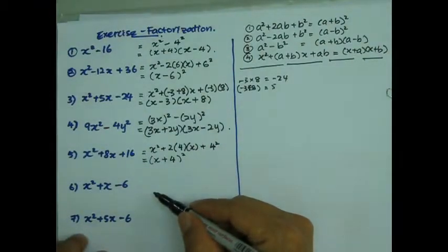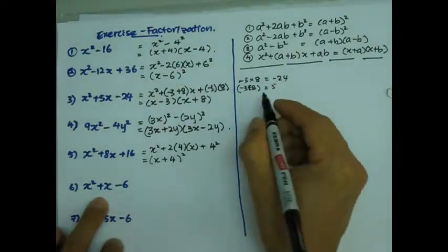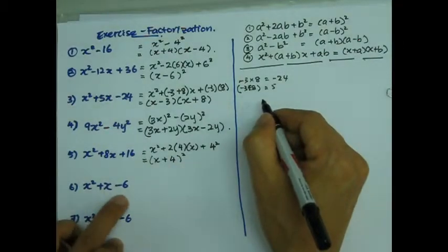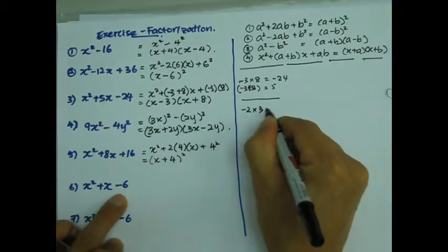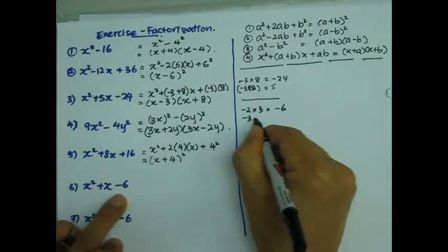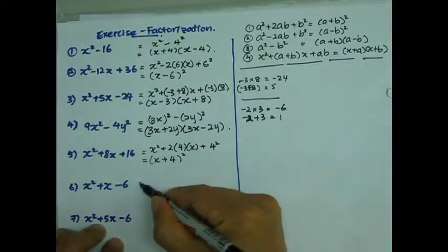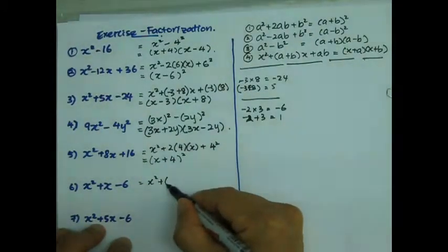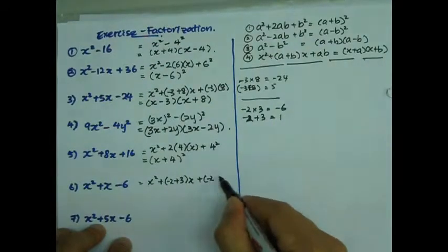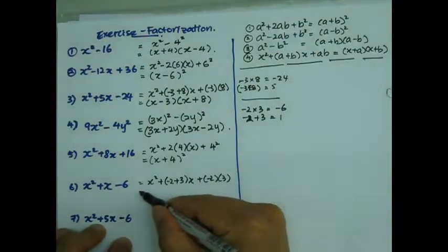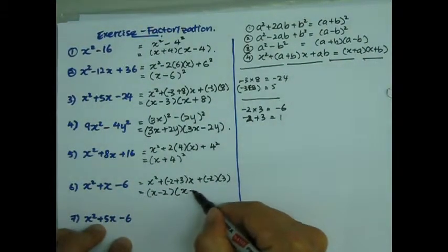Next one: x squared plus x minus 6. Again, I think this is going to be form number 4. I need to have 2 numbers that add together give me 1, and then multiply together give me negative 6. How about negative 2 times 3? That gives me negative 6. Negative 2 plus 3 gives me 1. Excellent. So I'm going to write this as x squared plus negative 2 plus 3 times x plus negative 2 times 3. That gives me negative 6. So this is equal to x minus 2 times x plus 3.